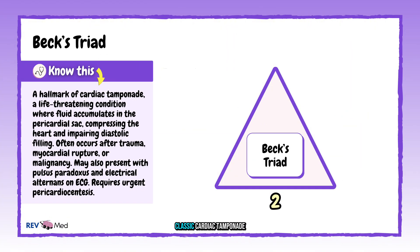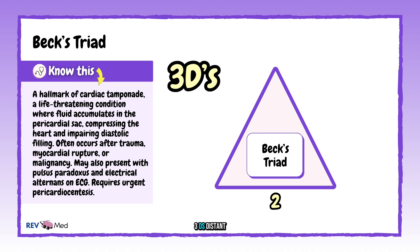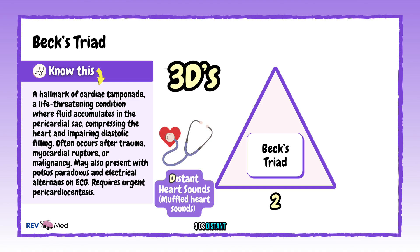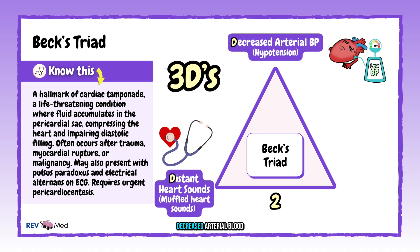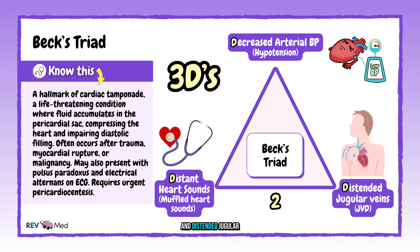Number two: Beck's triad — the classic cardiac tamponade signs. This is the three D's: distant heart sounds, decreased arterial blood pressure (hypotension), and distended jugular veins. Essentially, fluid around the heart squeezes it, making it hard to pump.